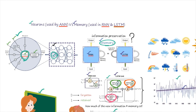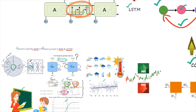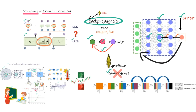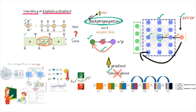Both networks are designed for preserving sequences of data. However, RNN has a very less amount of retention capability compared to LSTM — LSTM can preserve more sequence data than RNN. These are the two main technical differences between LSTM and RNN.